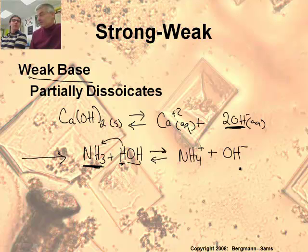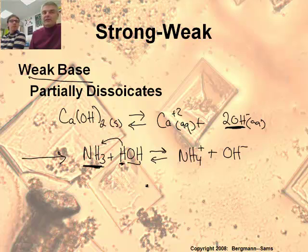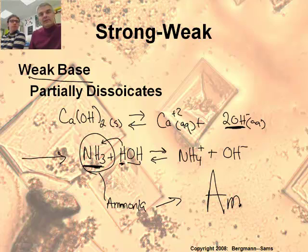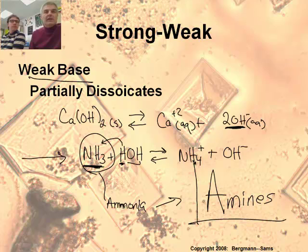So there are lots of these. We're going to give special names to these — these NH3-type compounds. This is called ammonia, but as a group they're called amines. So amines are these weak bases that have nitrogen in them.